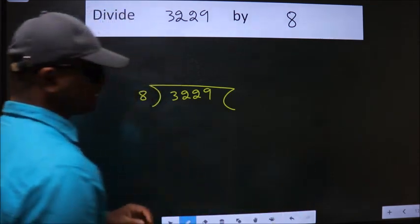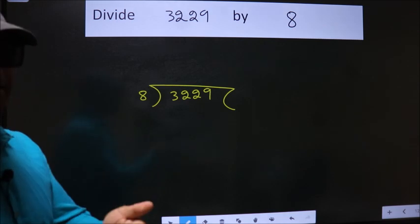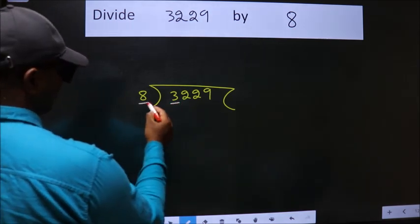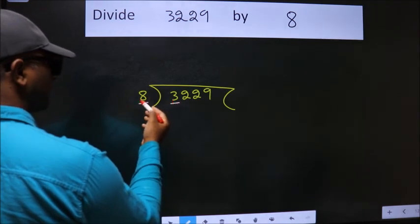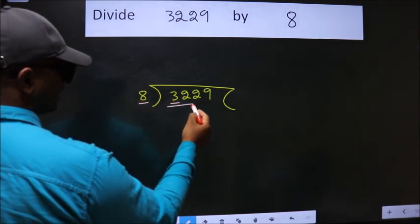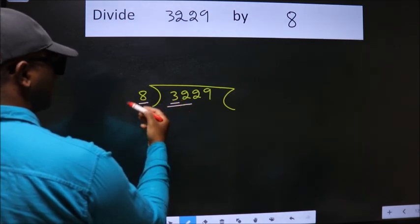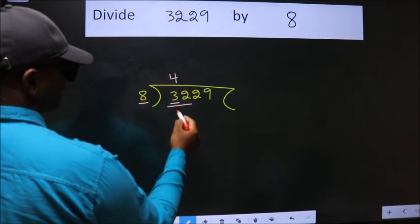This is your step 1. Next, here we have 3, here 8. 3 is smaller than 8, so we should take two numbers, 32. When do we get 32 in 8 table? 8 times 4 is 32.